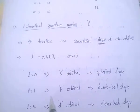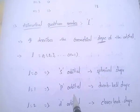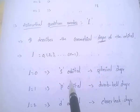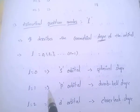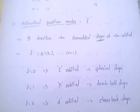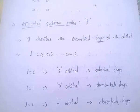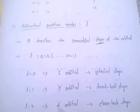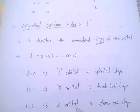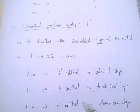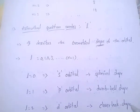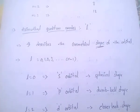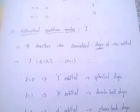If l=1, it is a p orbital. The shape of the p orbital is dumbbell shape. If l=2, it is a d orbital. The shape of the d orbital is cloverleaf shape.